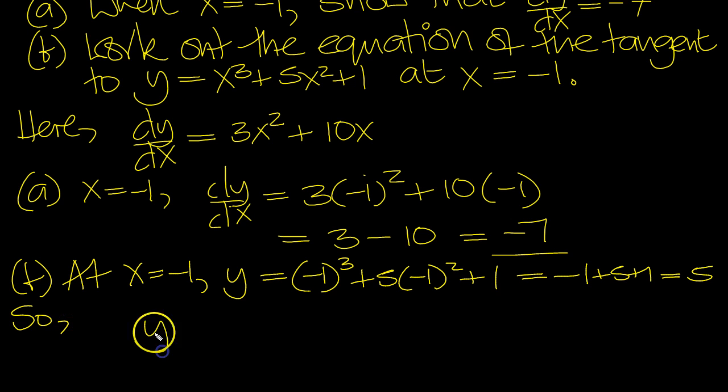So the equation of the tangent: y minus the y coordinate equals the gradient, which we worked out as minus 7, times x minus the x coordinate minus 1. Double minus makes a plus.